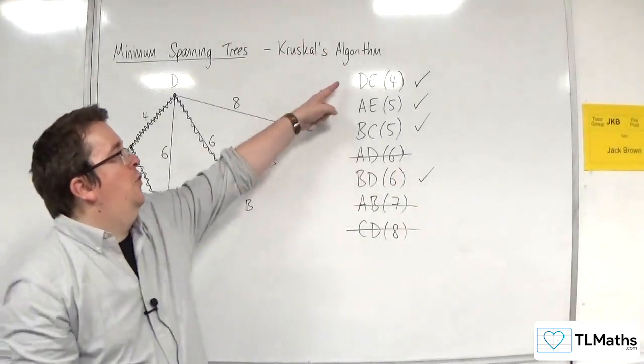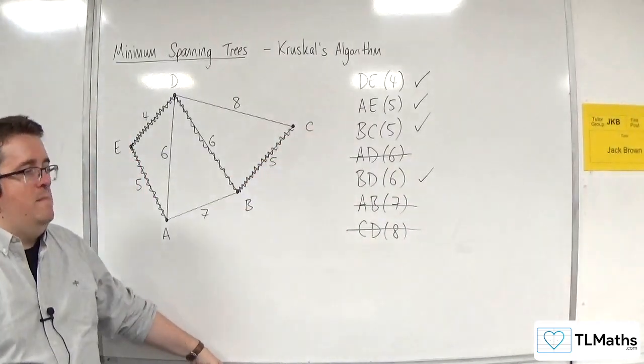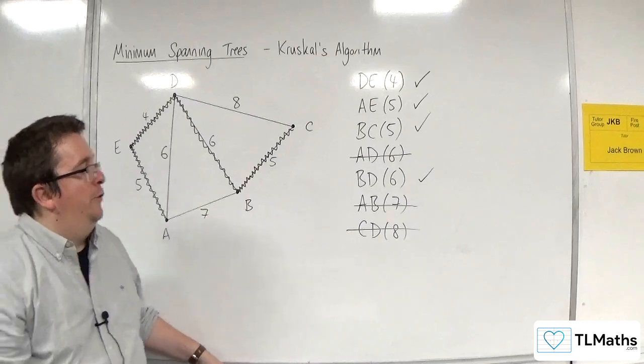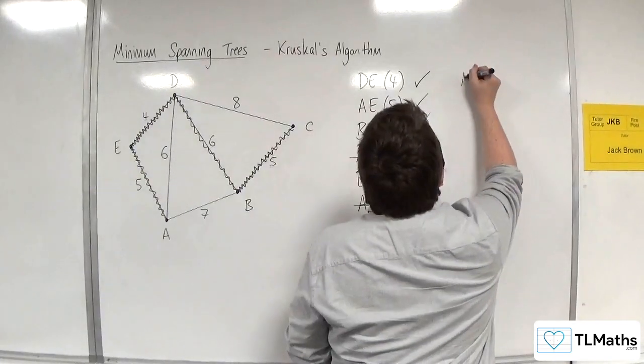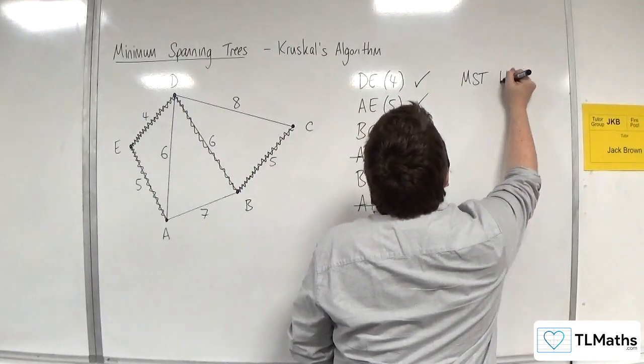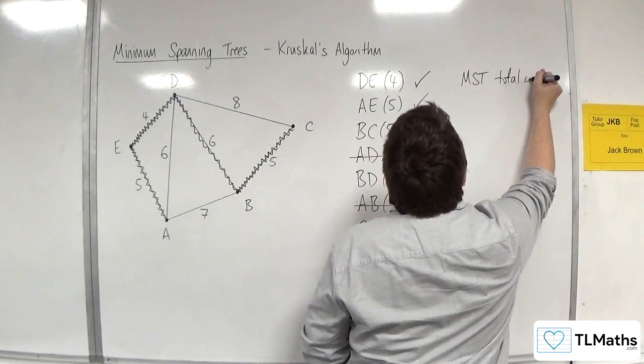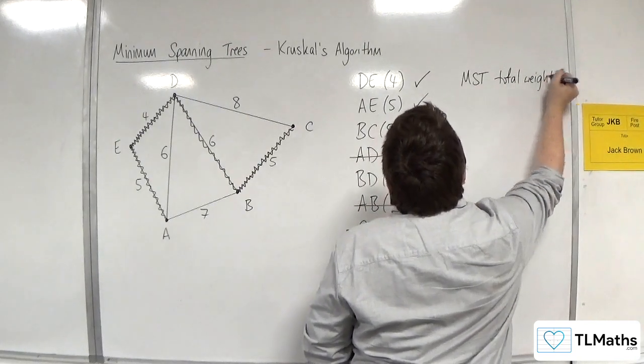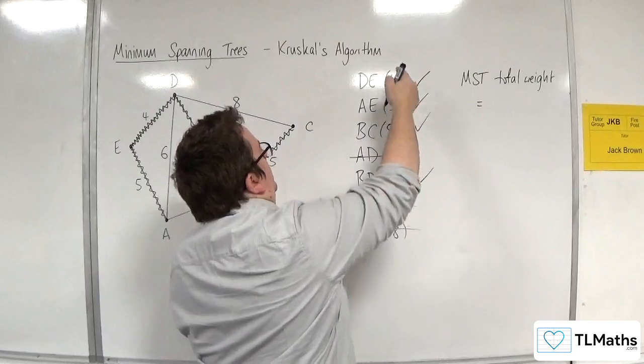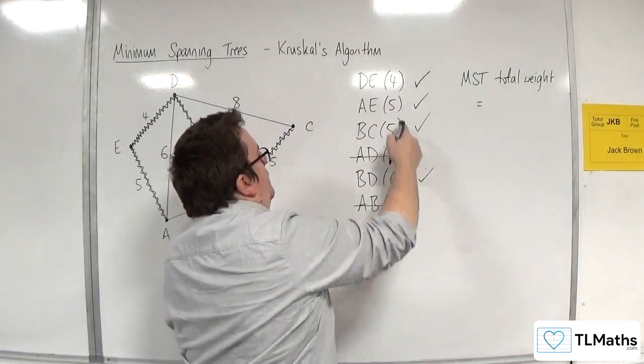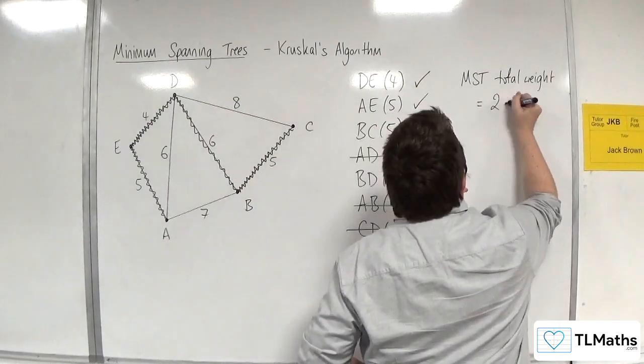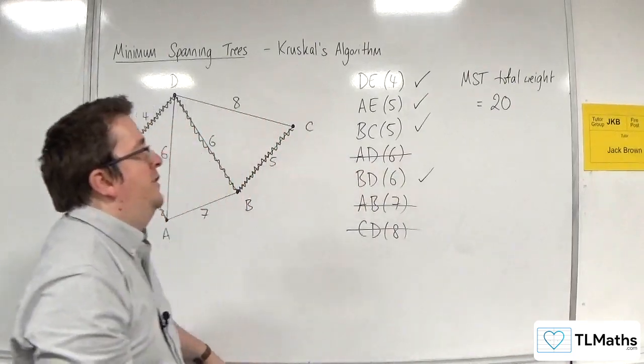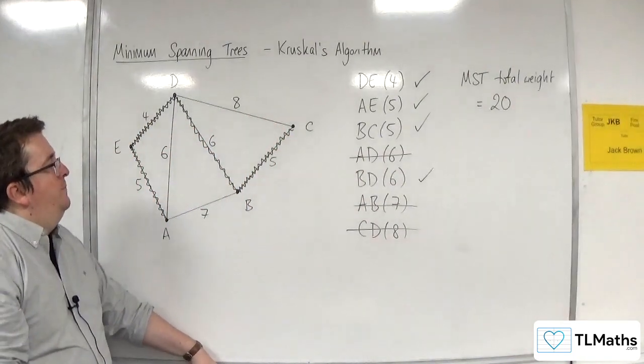So the four edges that make up my minimum spanning tree are those four. So the minimum spanning tree total weight is equal to, so 4 and 6 is 10, 5 and 5 is 10. So in total, it's 20. So that's the total weight of the minimum spanning tree.